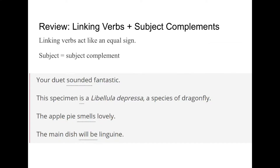Another common type of sentence structure we've been looking at: linking verbs plus subject complements. Linking verbs act like an equal sign — subject equals subject complement, with a linking verb where that equal sign is. So we could read: duet equals fantastic, specimen equals libellula depressa, apple pie equals lovely, main dish equals linguine.